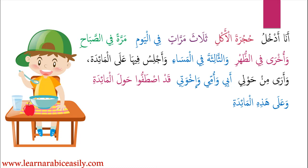وعلى هذه المائدة — and on this dining table. على here is a preposition, حرف الجر, which gives the noun following it a كسرة. هذه does not change regardless of whether على comes before it or not. However, المائدة, the noun following هذه, takes a كسرة because of the على that precedes the entire phrase.